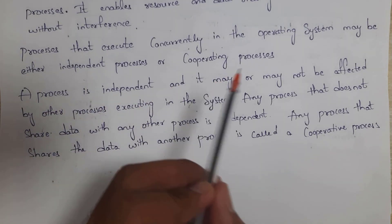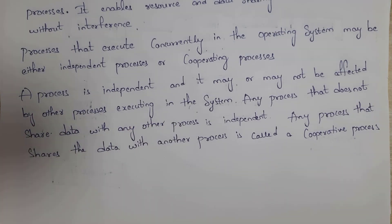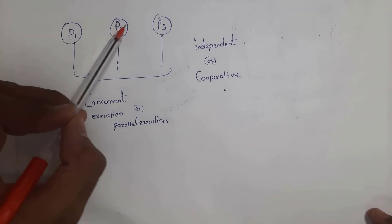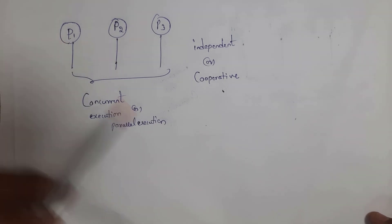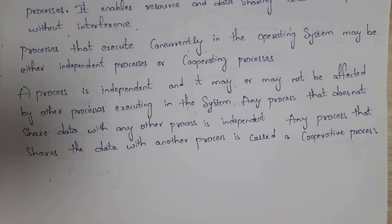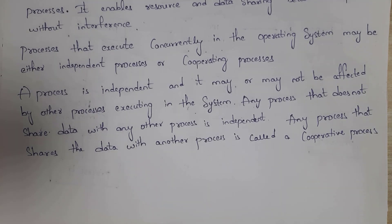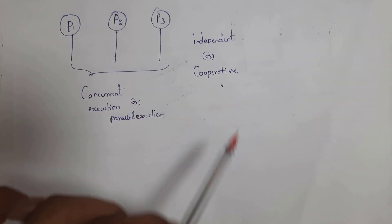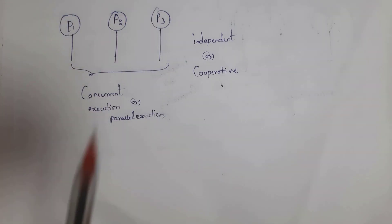A process is independent if it may or may not be affected by other processes executing in the system. For example, process P1 is an independent process, so P1 may or may not be affected by processes P2 and P3. Any process that does not share data with any other process is known as an independent process. We call P1, P2, and P3 independent processes because P1 will not share data with P2 and P3, P2 will not share data with P1 and P3, and P3 will not share data with P1 and P2.